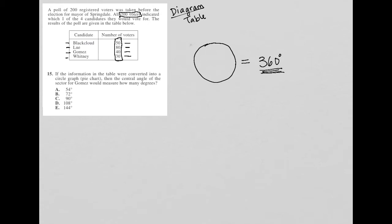So when I look at the number of voters and the candidates here, when I look at Gomez in particular, Gomez received 40 out of 200 votes.